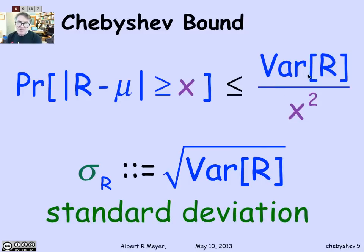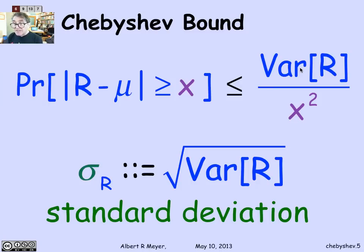You might wonder: if you understand variance, what's the point of taking the square root and working with that? The answer is simply that if you think of r as a random variable whose values have some dimension — like seconds or dollars — then the variance of r is the expectation of (r minus mu) squared, which means its units are seconds squared or dollars squared. The variance itself is a squared value, which is not directly reflecting the magnitude of the errors you expect r to make — the distance you expect r to be from its mean. We can get the units back into matching the units of r by taking the square root, and that's called the standard deviation of r.